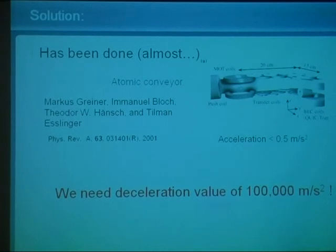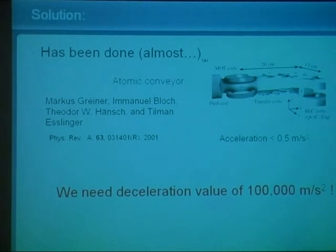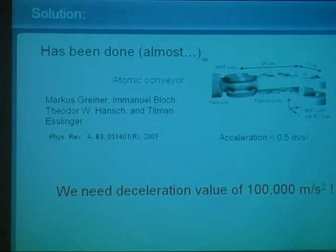As usual, run the numbers. What is the acceleration value that Hänsch needs? He doesn't need any acceleration because his atoms are already trapped, zero mean velocity. The accelerations are, to say the least modest, less than one meter per second squared. We have a beam moving at 500 meters per second, we want to stop it in a meter. We arrive at accelerations of 100,000 meters per second squared. So 100,000 more deceleration is needed.